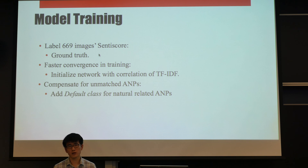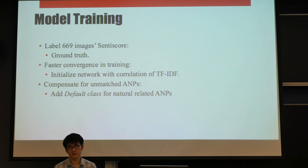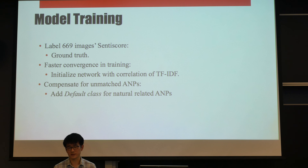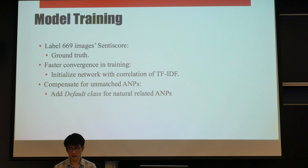To train our model, we manually labeled a few hundred images. To reach faster convergence, we use the correlation between TF-IDFs of the RCN topics and adjective-noun pairs as the initial values of our network. For nature-related adjective-noun pairs — such as Cloud, Sand, and Sunshine — which cannot be matched to any of the 200 RCN classes, we set a default class for them.